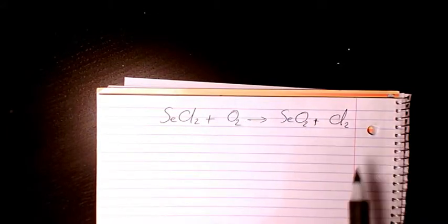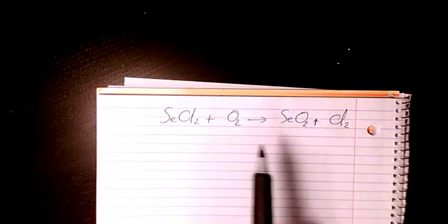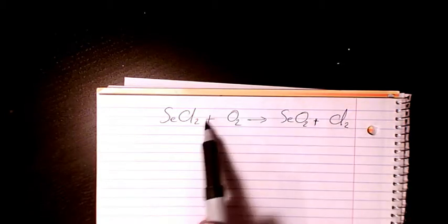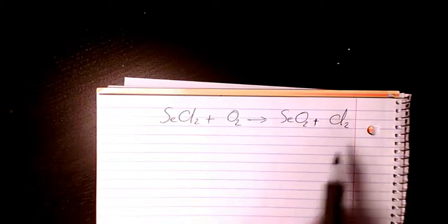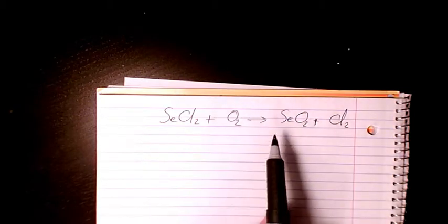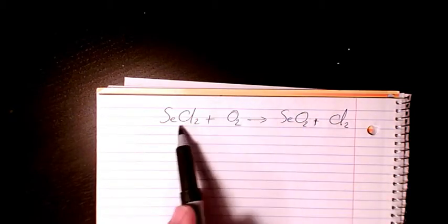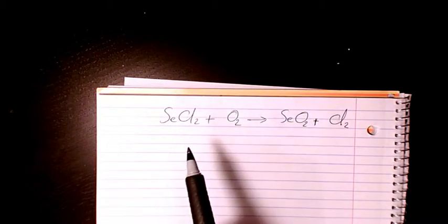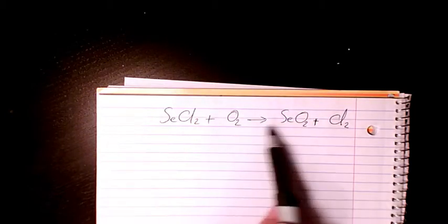So for balancing, we have chlorine on both sides are two, so we don't need to change anything for now. Se is one and then Se is one here, so that's okay. What about oxygen? Oxygen is also balanced.